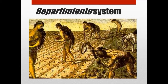The repartimiento system replaced the encomiendas. The Spanish verb repartir means to distribute. This was a forced labor system in the Spanish colonies in which Native Americans were required to work a set number of days or weeks. This work might take place on farms, in mines, or on public works projects. This system had its share of abuses as well, especially Spanish officials who demanded more days of work than Indians were legally required to provide, or who used laborers for their own personal land holdings or business dealings.